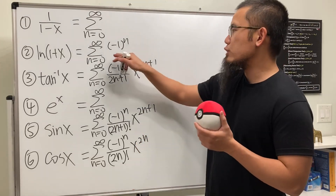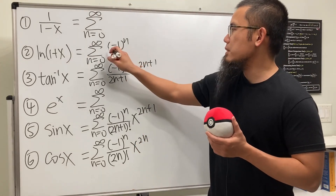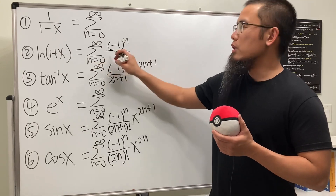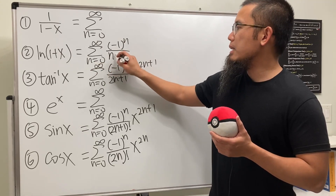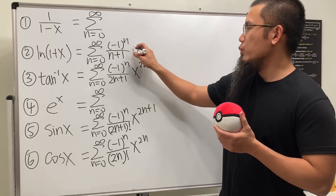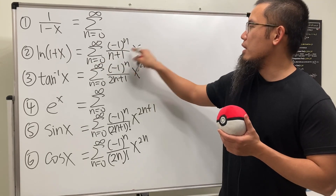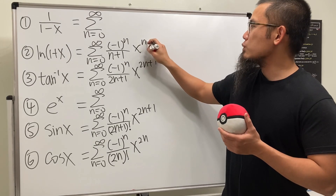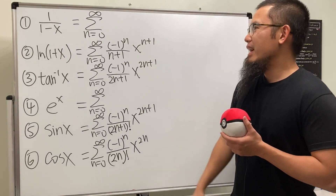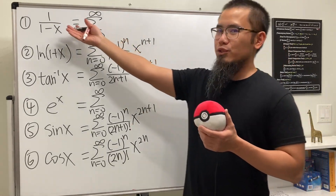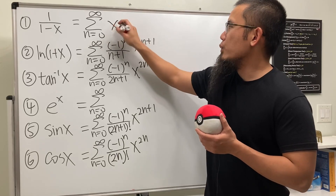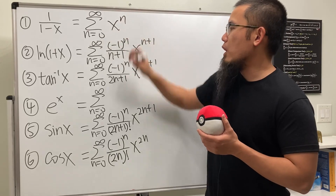For natural log, it's not even and it's not odd, but we have all the natural numbers on the bottom. Because the index starts at n=0, we write n+1 in the denominator and x to the n+1 power. Then let's finish with our best friend 1/(1-x) — this is just the geometric series, so we get x to the nth power.